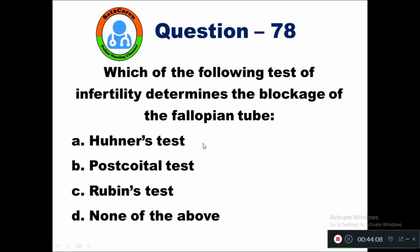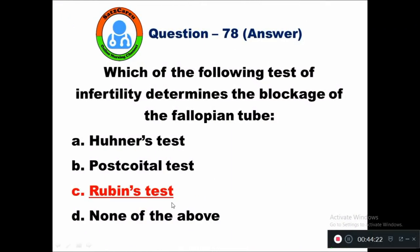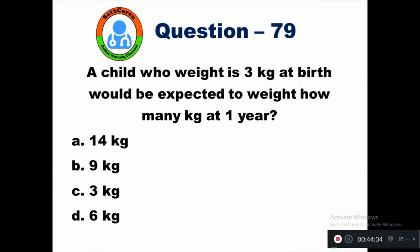Question 78: Which of the following tests of infertility determines the blockage of the fallopian tubes? Option A Horner's test, B Postcoital test, C Rubin's test, D none of the above. The right answer is Rubin's test, which is used to diagnose blockage of the fallopian tubes in infertility.